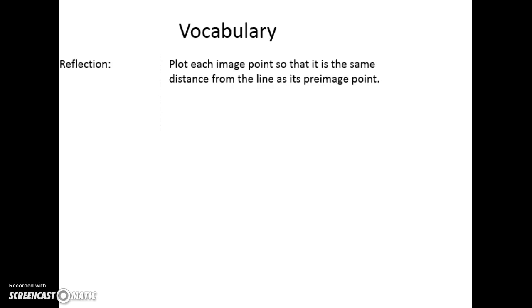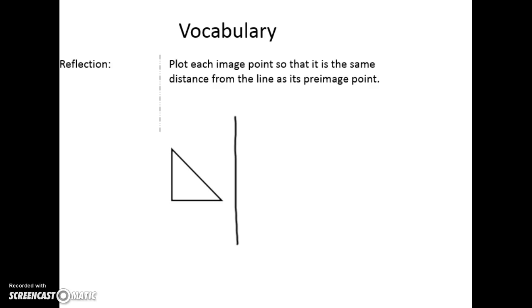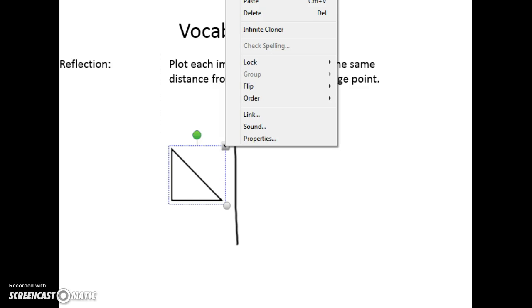In this video we're going to look at reflections. A reflection is when you plot each image point so that it is the same distance from the line as its pre-image point. That is a reflection over a line. So the idea is if you have a line and an image, and if I were to reflect that over a line, I'm literally just flipping it over that line. If this were a piece of paper it would be like folding it on that line.